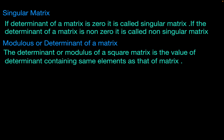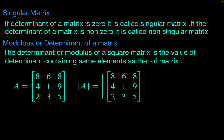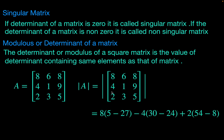For this, the matrix must be a square matrix. Here a 3×3 square matrix is named A. The modulus of A equals the determinant of this 3×3 matrix. We expand with respect to the first column, giving: 8 multiplied by (5 minus 27), minus 4 multiplied by (30 minus 24), plus 2 multiplied by (54 minus 8).